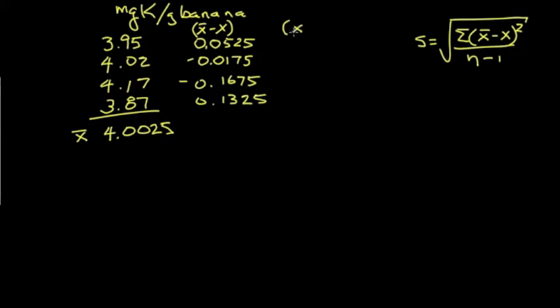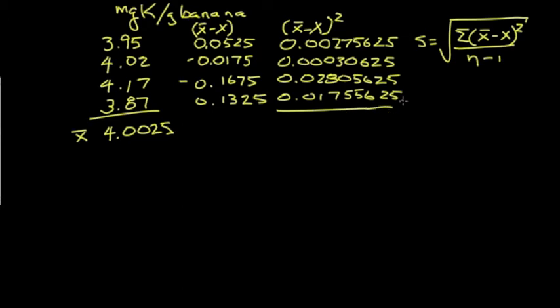So let's take that previous column value and square each entry. I'll just put those there. So I'm going to square that number, 0.00275625. Now let me just write the rest of the values down as they would appear on my calculator. And there we have the data.